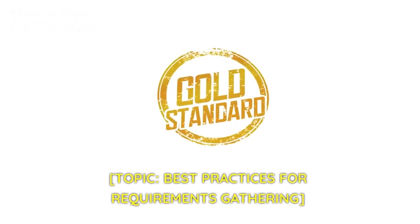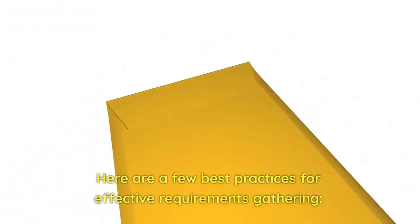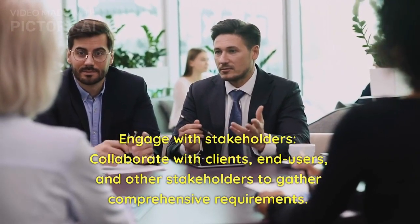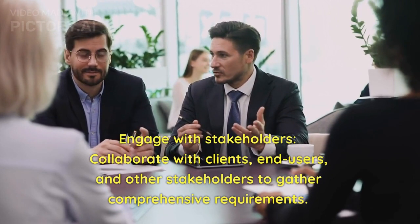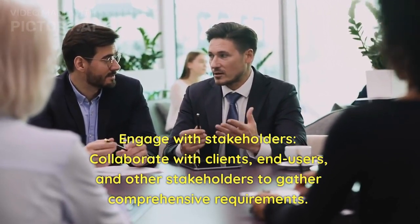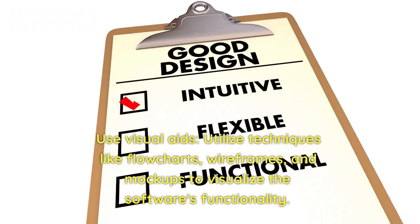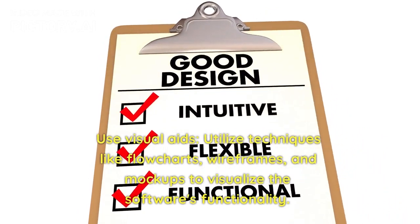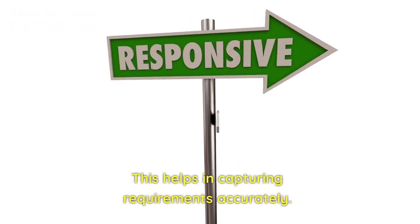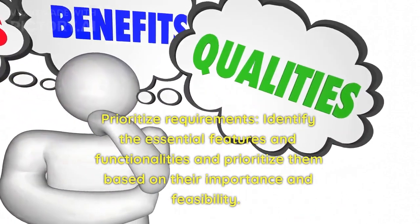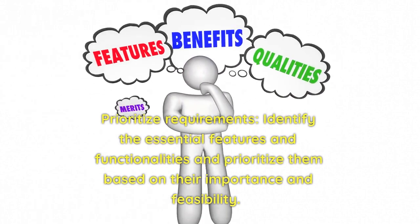Here are a few best practices for effective requirements gathering. First, engage with stakeholders — collaborate with clients, end-users, and other stakeholders to gather comprehensive requirements, ensuring the software aligns with their expectations. Second, use visual aids like flowcharts, wireframes, and mock-ups to visualize the software's functionality and capture requirements accurately. Third, prioritize requirements by identifying essential features and functionalities and ranking them based on importance and feasibility.